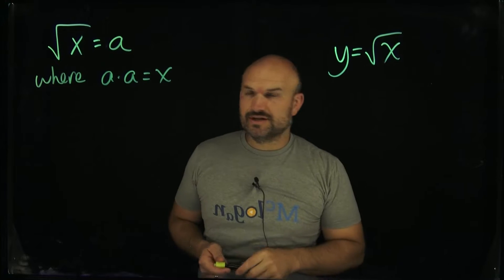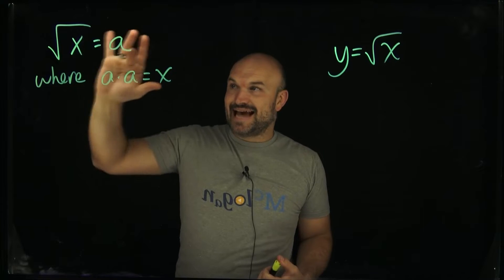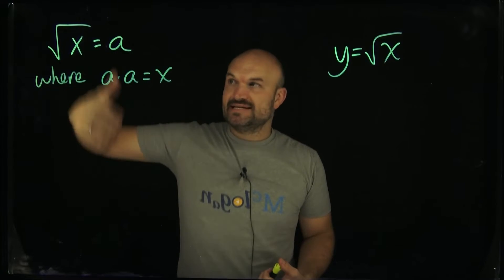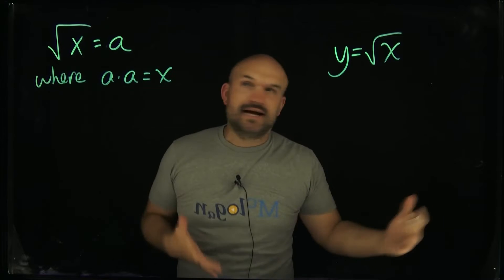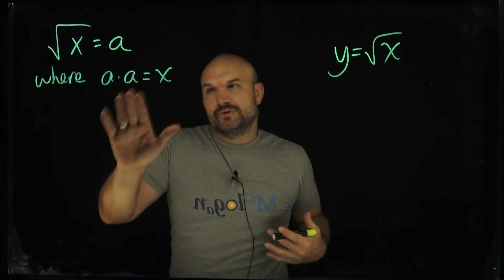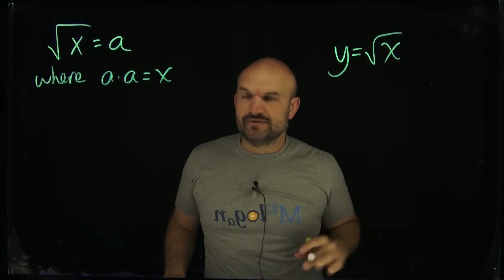Okay, so what I want you to understand is when I take the square root of a number and I get a value a, what that represents is a times a, multiplying by self, is going to give you that value of x. Think about it hypothetically, like if I had the square root of 9, that's equal to 3. Why? Because 3 times 3 is equal to 9. So it's very important to understand the square root function.